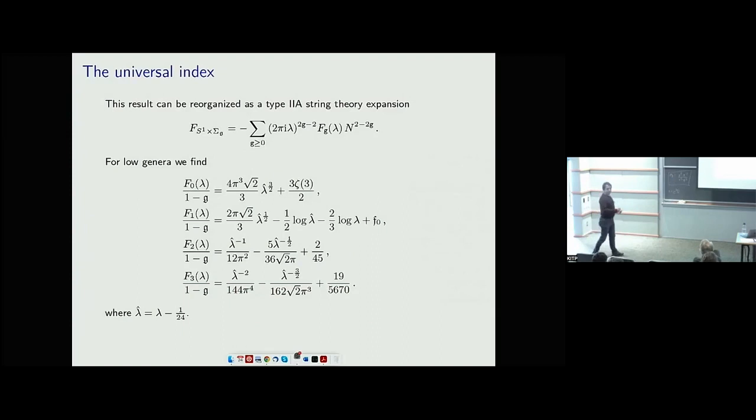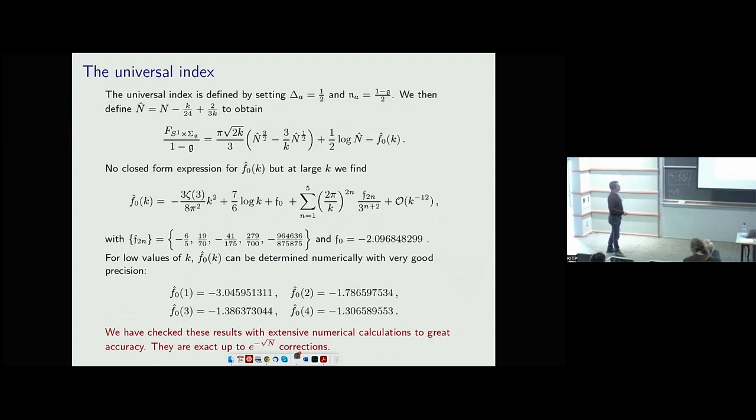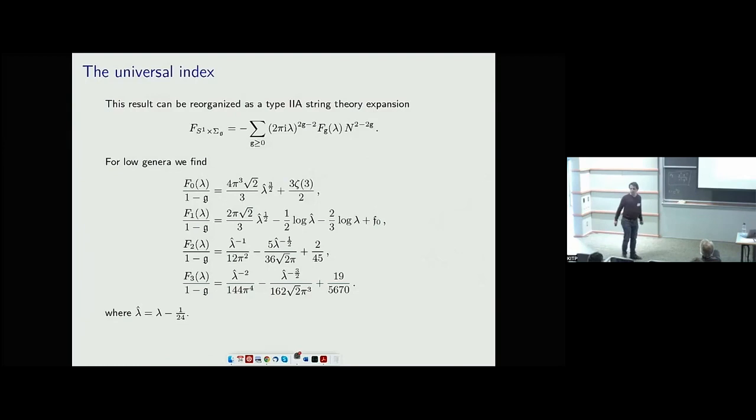Using these results, you can resum the expansion into type IIA — though it was not obvious that you could do so. You get predictions for the worldsheet free energies with different boundary conditions: before I had AdS4 × S⁷ or CP³ with a sphere on the boundary, now I have S¹ × Σ_g. If you look at the numbers, they do change compared to the sphere case, but the shift of λ is exactly the same.